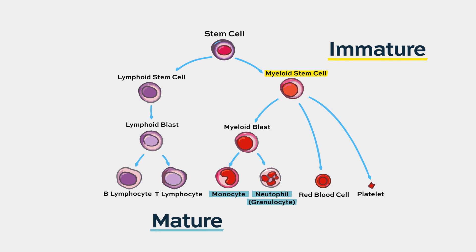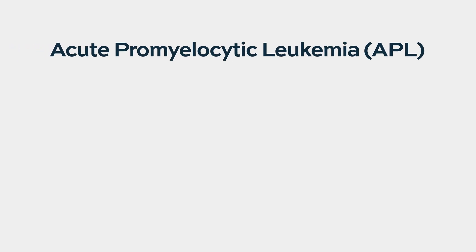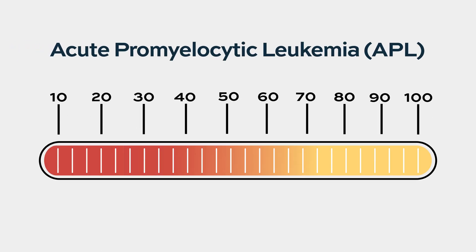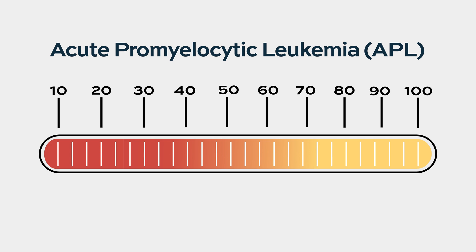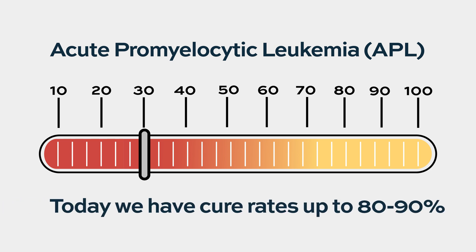Speaking of promyelocytes, there's one subtype called APL — acute promyelocytic leukemia — which is clinically very different from the others. This had the worst prognosis when I started, with a cure rate of 30%, and now the cure rate worldwide is between 80% and 90%. So it matters, obviously, what kind of leukemia you have. That's an easy classification based on the cell of origin.